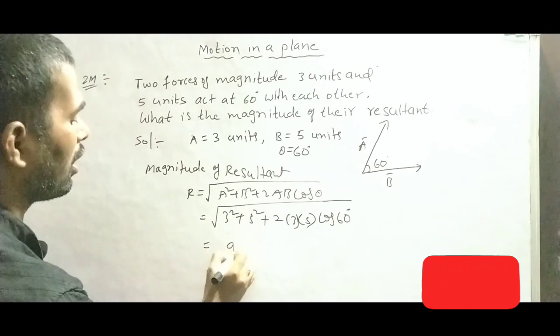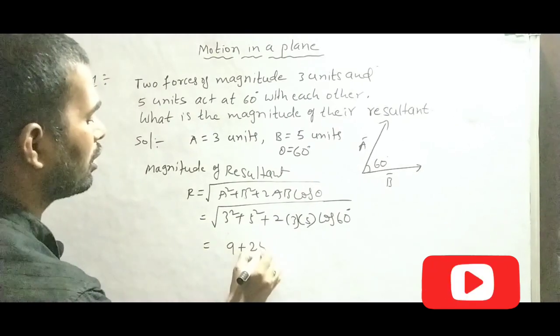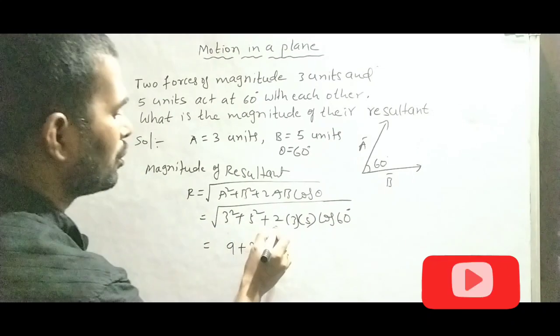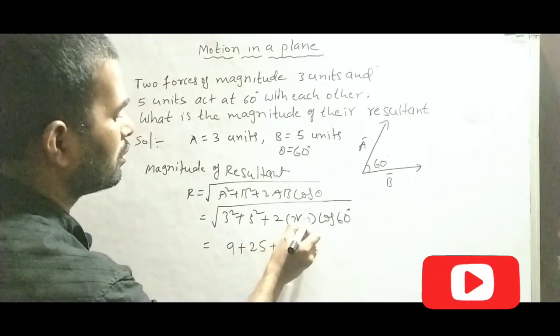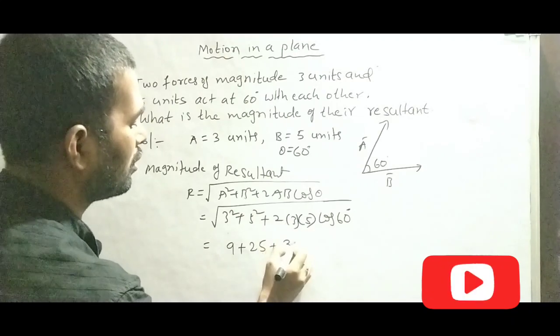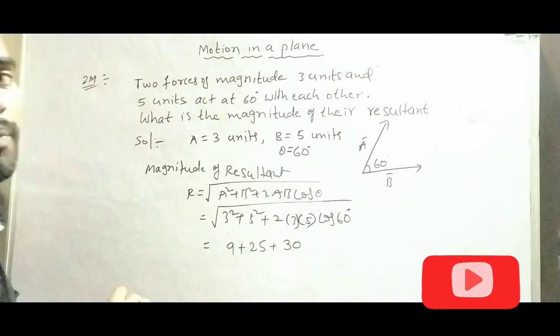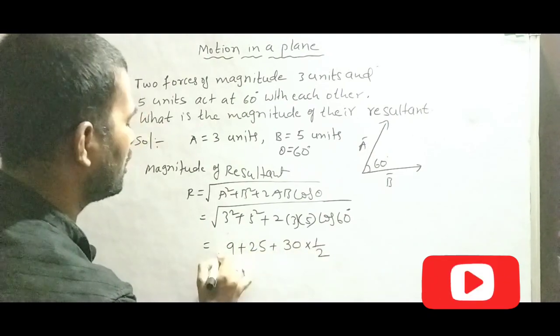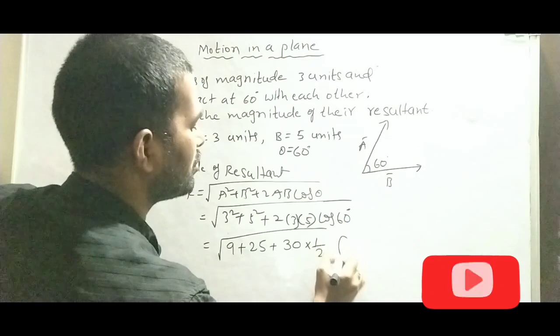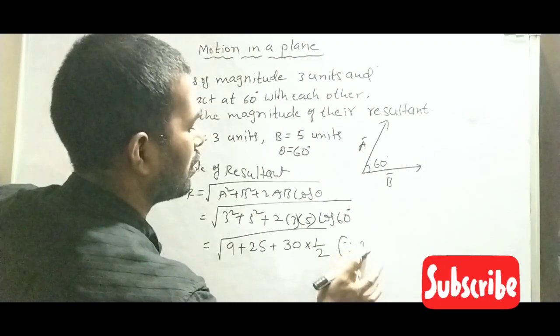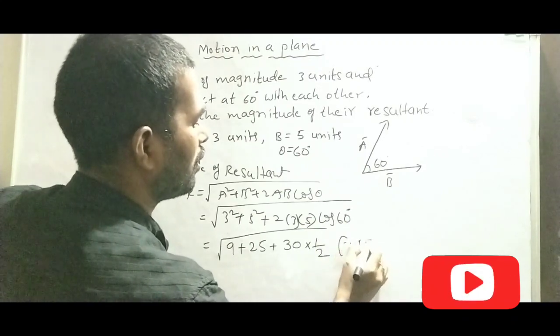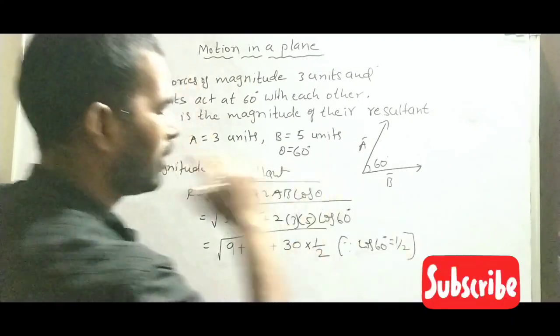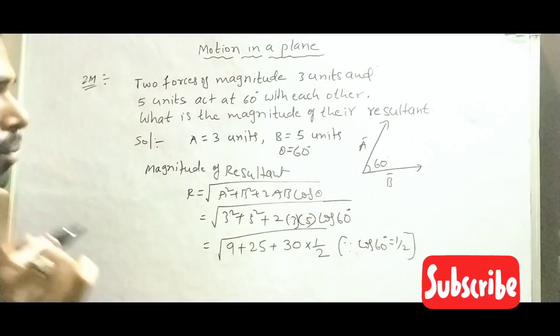3 square is 9 plus 5 square is 25 plus 2, 3s are 6, 6, 5s are 30, cos 60. Cos 60 value is 1 by 2. So we can write here cos 60 degrees equals 1 by 2.